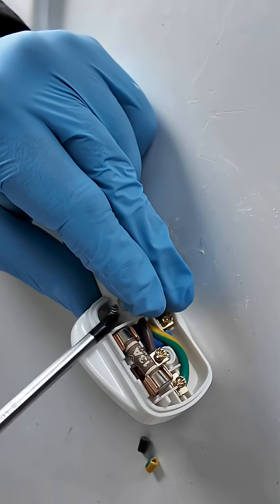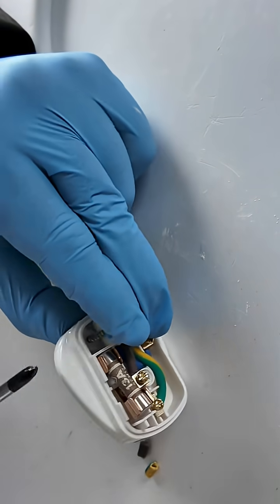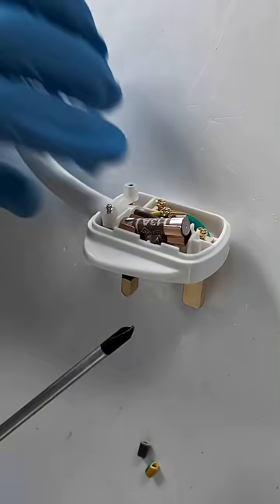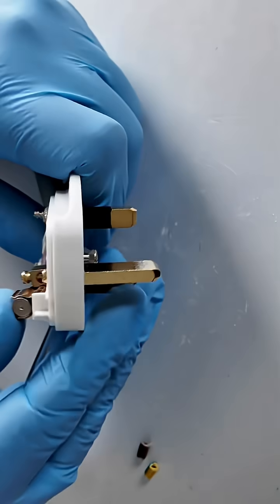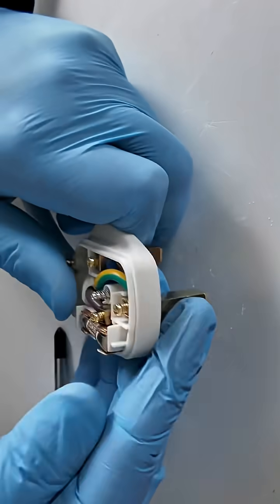Secure the cable. The cable must be clamped securely using the cord grip. It should grip the outer insulation, not the inner wires. Tighten the grip screws.